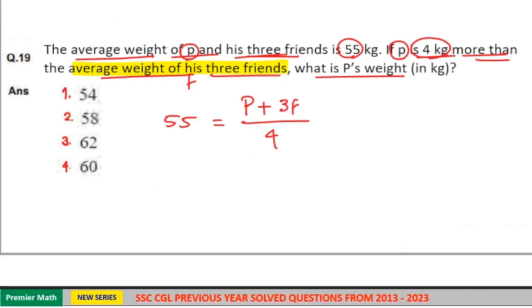Now here, weight of P is 4 kilograms more than the average weight of 3 friends. That is, P's weight is equal to 4 kilograms more than average weight of 3 friends, which is equal to F.